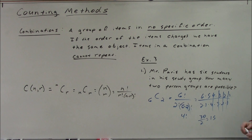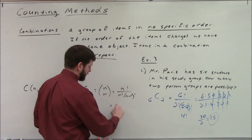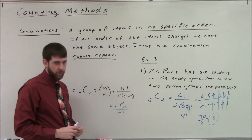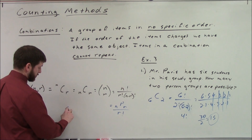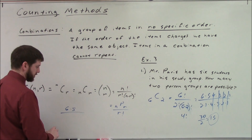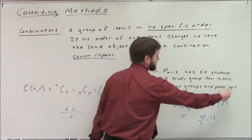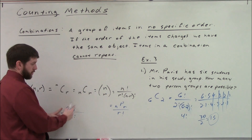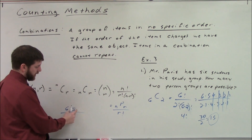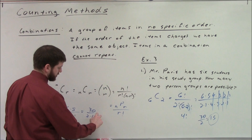So there are 15 different groups of two from those six students. An alternate approach: calculate the permutation 6P2 — six choices for the first person, five for the second, so 6 × 5 = 30 — then divide by r factorial (2!) to remove order. That gives 30 over 2, which is 15. Either method works — use whichever you're comfortable with.